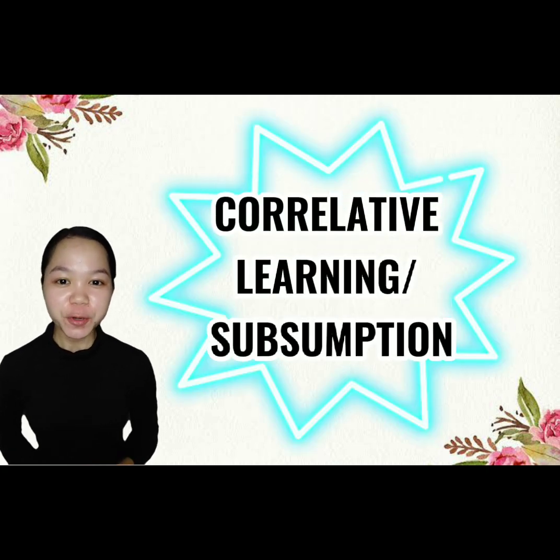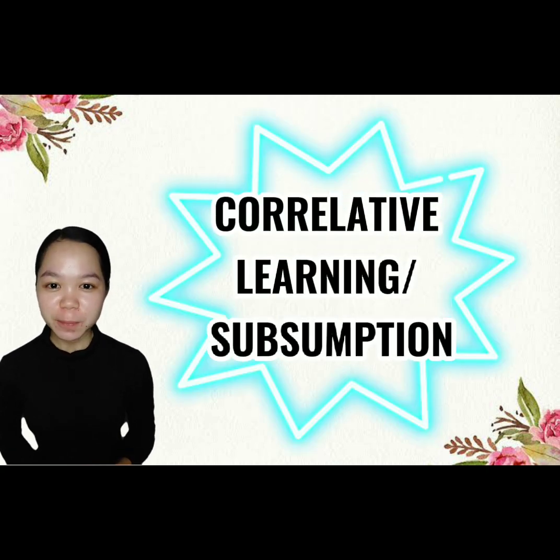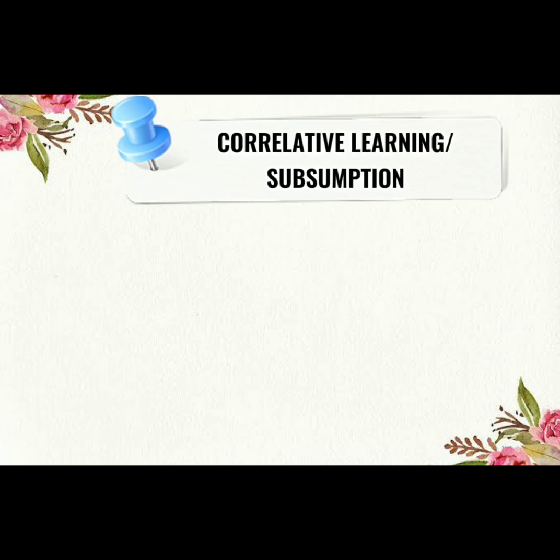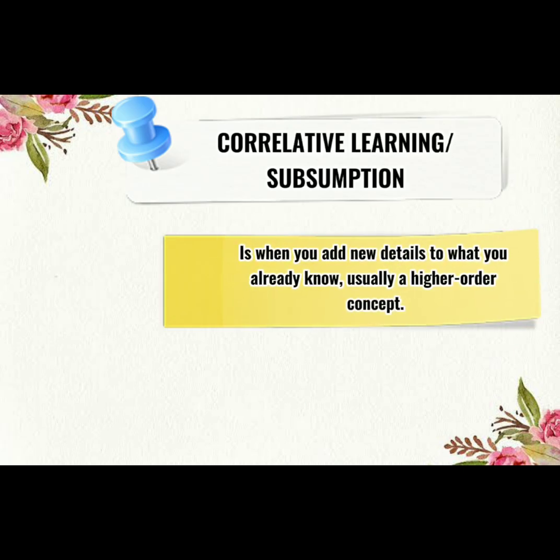Now let's move on to the second process of meaningful verbal learning, which is correlative subsumption. Correlative subsumption or learning is when you add new details to what you already know, usually a higher-order concept.